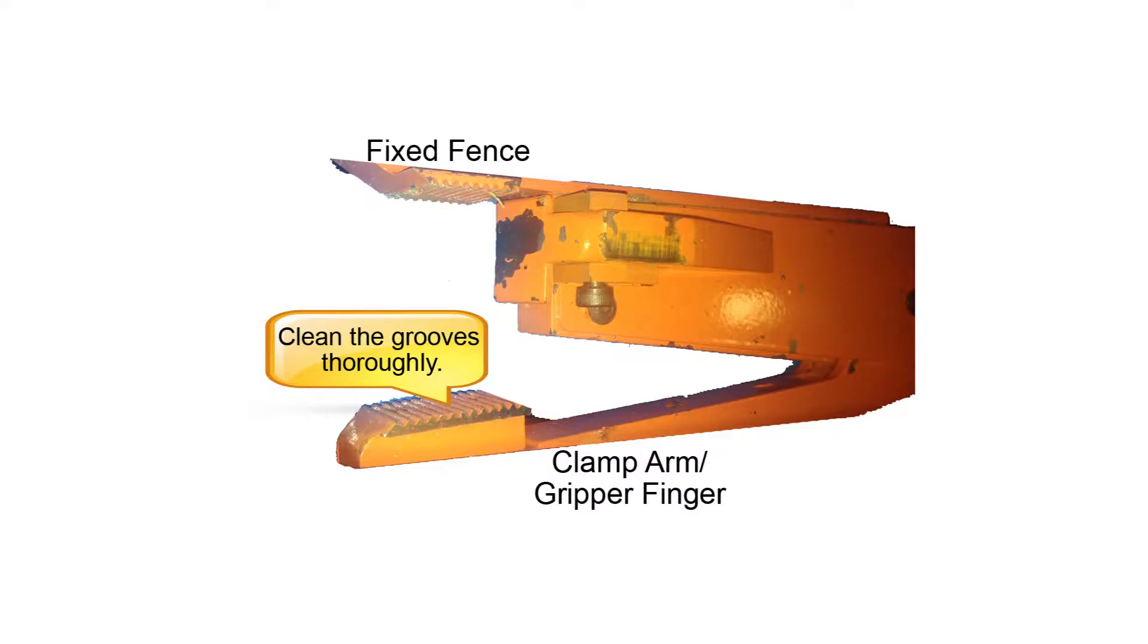If the gripper clamp arm is traveling smoothly, lockout and tag out the system to clean and inspect the clamp more closely for step two. Blow off the surrounding sawdust with compressed air. Thoroughly clean the pad on the gripper clamp arm and the fixed fence.